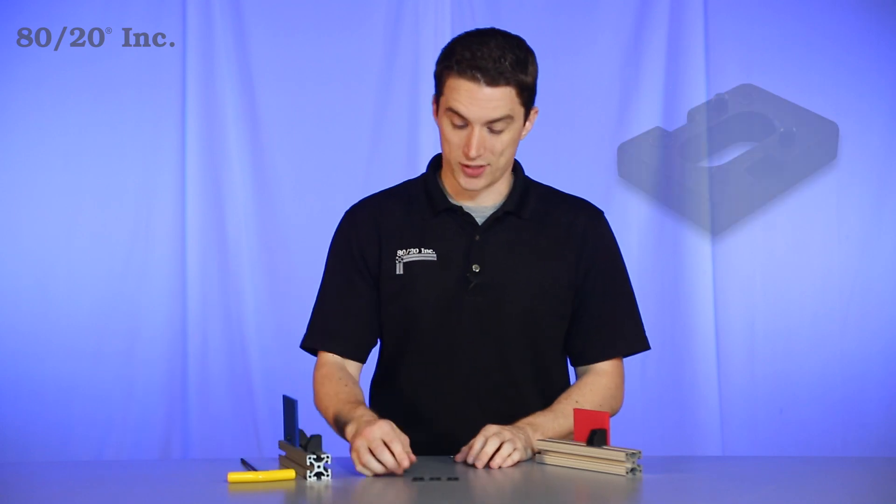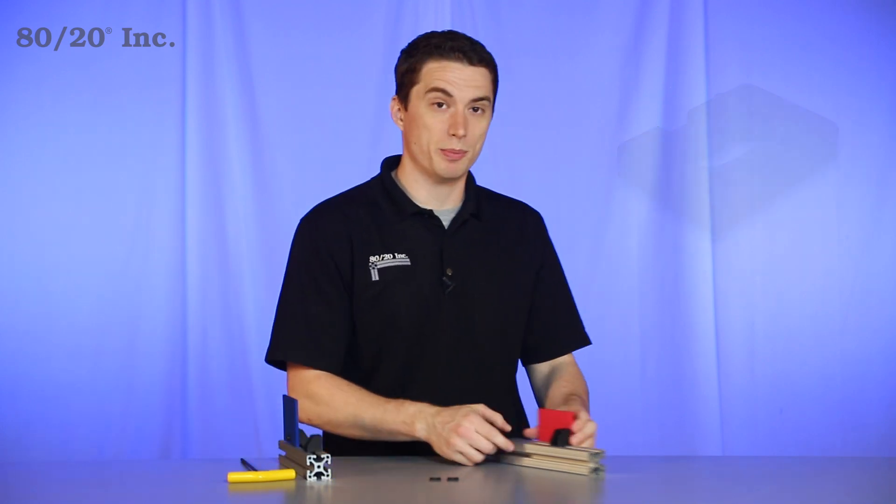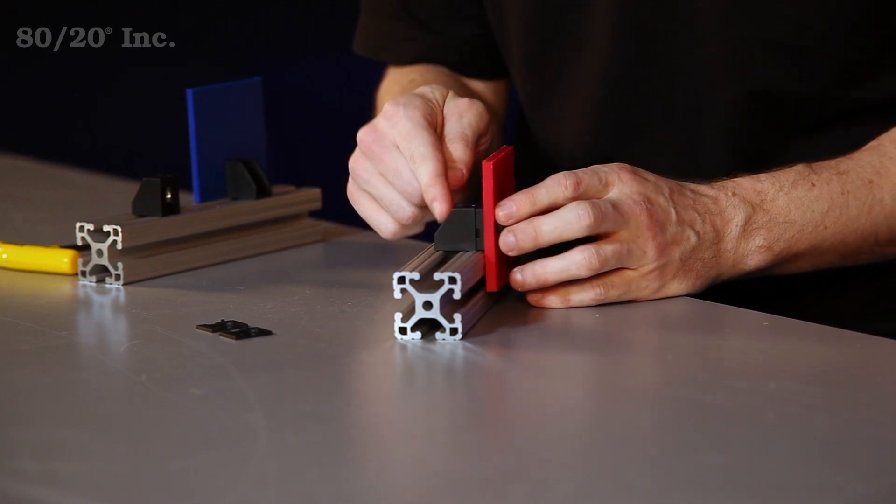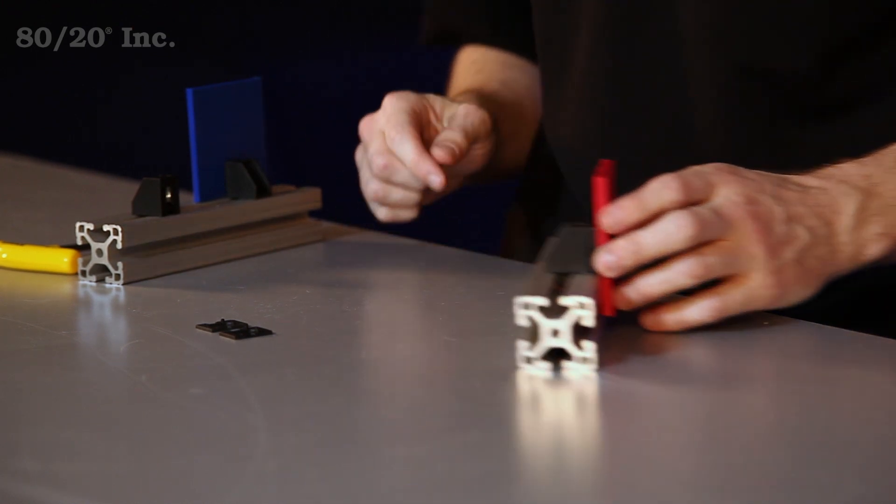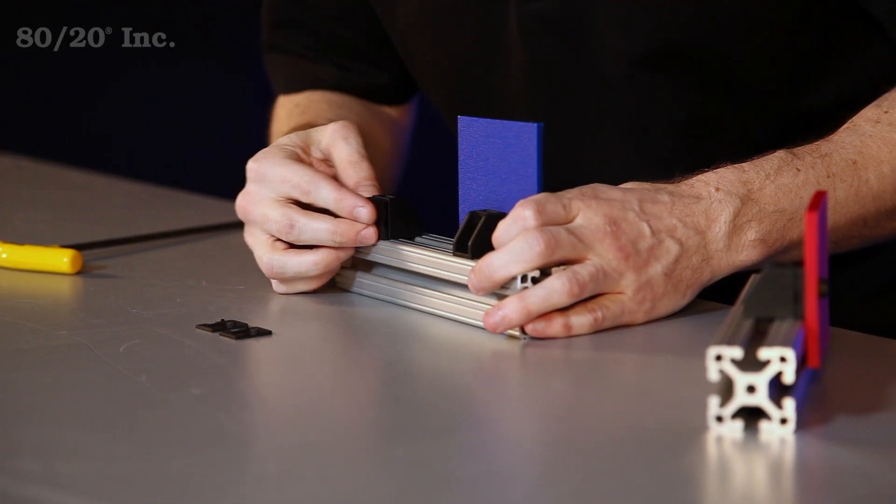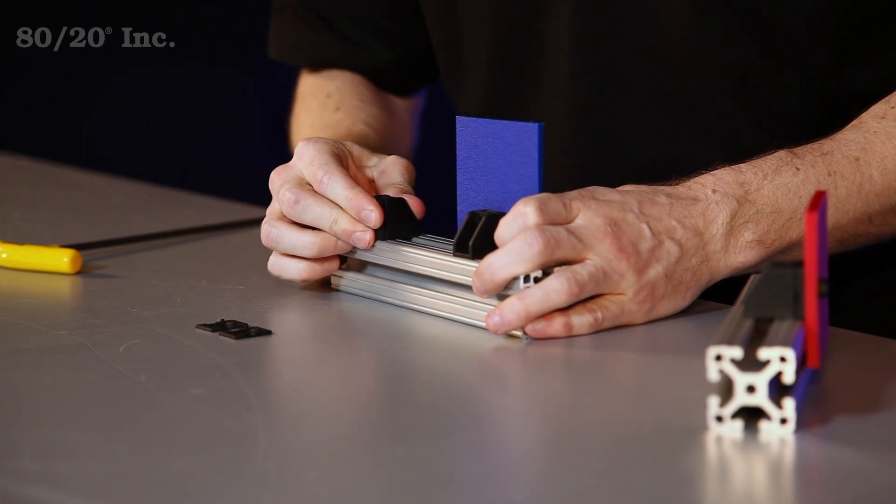One last option you have is a spacer. This is going to allow you to mount your panel to the surface of the profile by filling the space between the block and the panel. You simply take the spacer and place it right onto the back of your block, just like that.